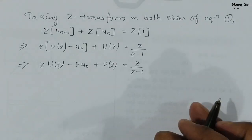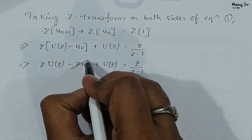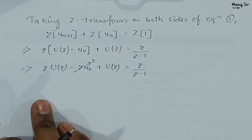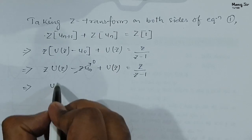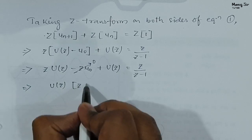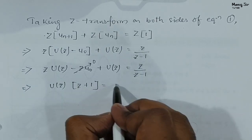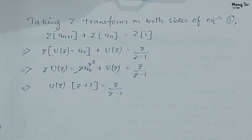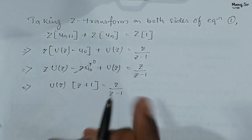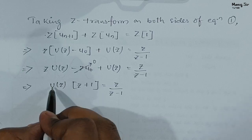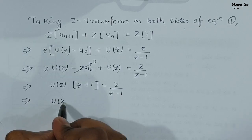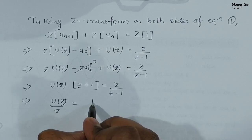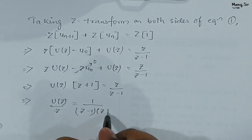Now, the given condition is U(0) = 0, so when we substitute U(0) = 0 that term vanishes. We then collect U(Z) terms: U(Z)·(Z+1) = Z/(Z−1). Dividing both sides by Z, we get U(Z)/Z = 1/[(Z−1)(Z+1)].